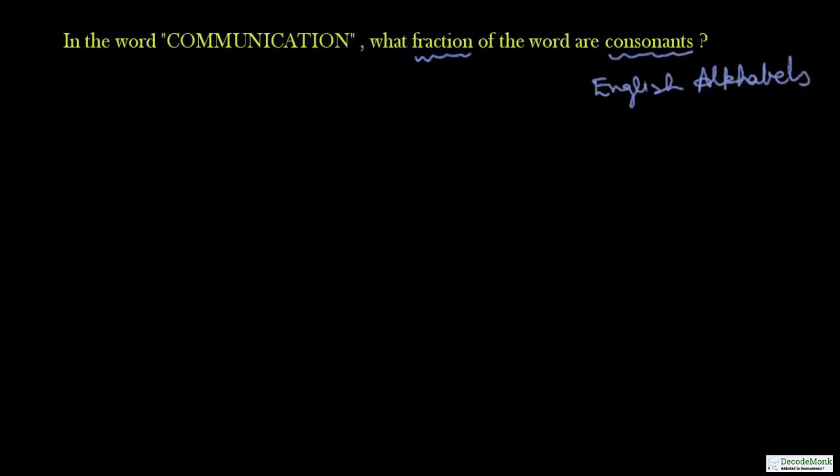Now, alphabets. A little bit of English in Maths class. So English alphabets can have vowels or consonants. What are the vowels? There are five vowels: A, E, I, O, U are the vowels and the remaining alphabets are the consonants.